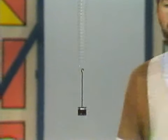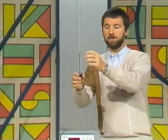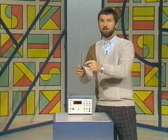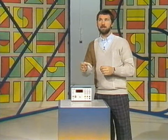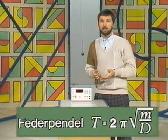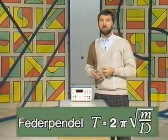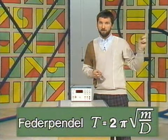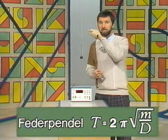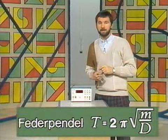Ist Ihnen inzwischen ein anderes Standardbeispiel für mechanische Schwingungen eingefallen? Ich meine das Federpendel. Bei einer Feder ist die Kraft proportional zur Dehnung. Damit können wir eine Federkonstante definieren, und damit berechnet sich die Periodendauer als 2π mal Wurzel aus Masse durch Federkonstante. Im Gegensatz zum Fadenpendel ist beim Federpendel die Periode abhängig von der Masse.